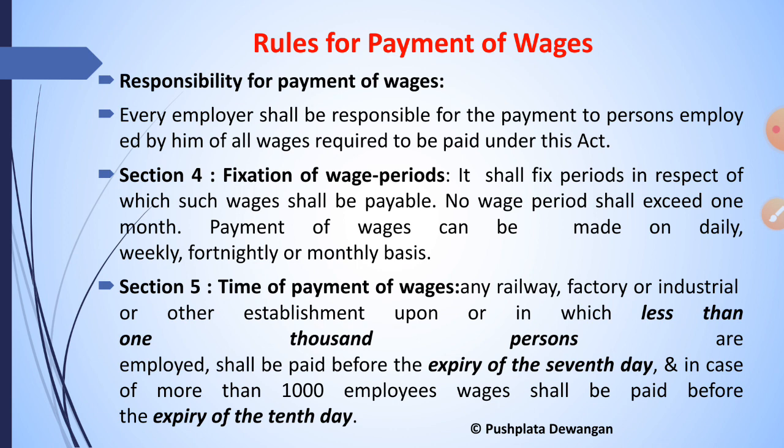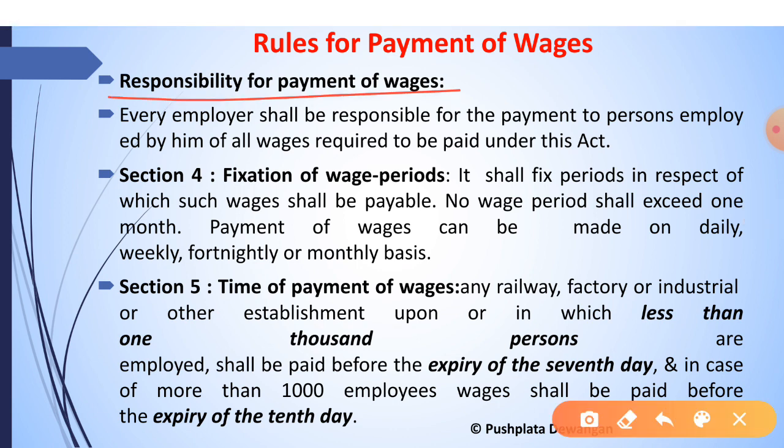The first provision concerns the rules for payment of wages — specifically, responsibility for payment. Every employer shall be responsible for the payment of wages to persons employed by him. In factories, if a person has been named as a manager, that person is responsible for payment of wages. In an industry or other establishment, the person responsible for supervision and control is responsible. Upon a railway, if the employer is the railway administration and it has nominated a person for a local area, that nominated person is responsible.